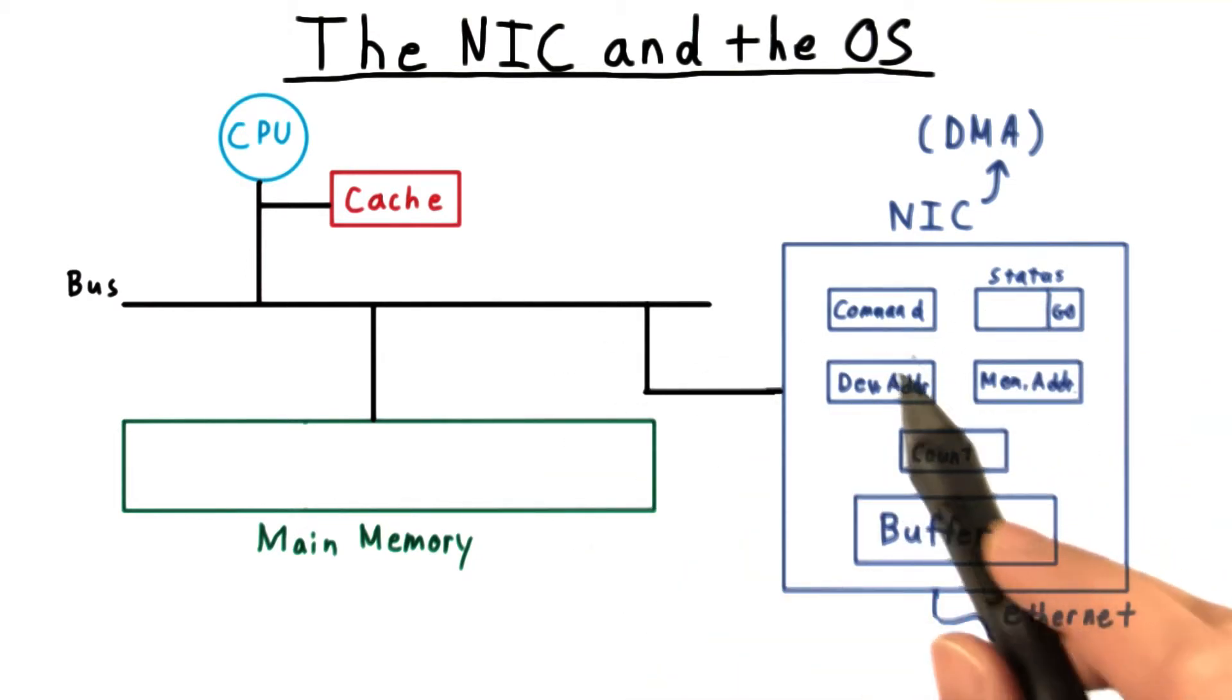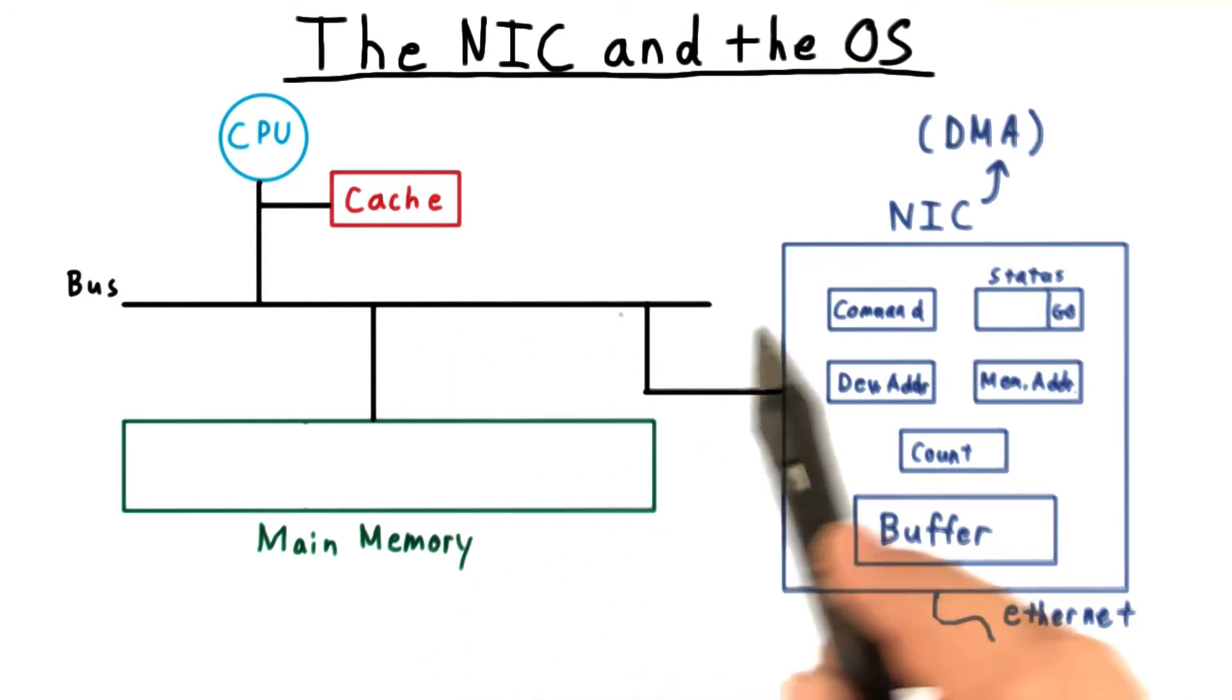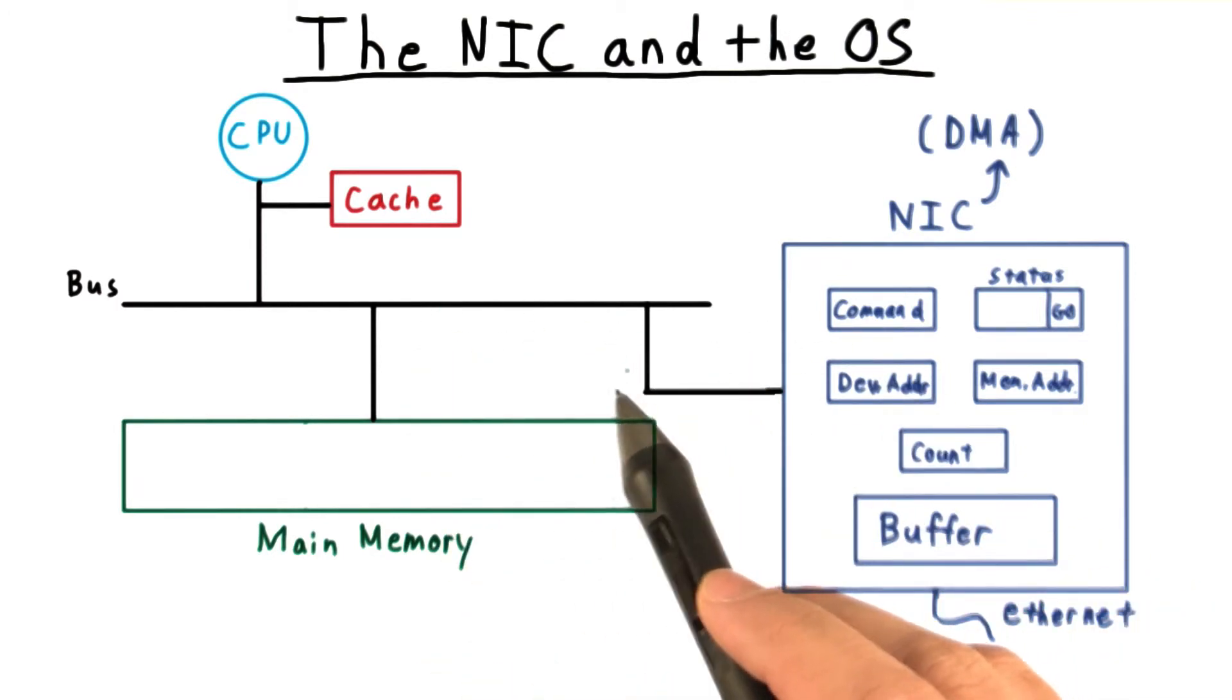Because the NIC controller puts all of the copy instructions on the bus, the CPU doesn't have to. He can go about his business.